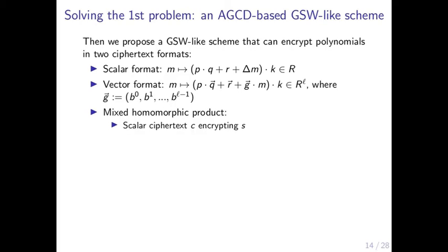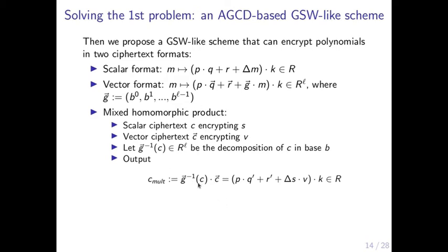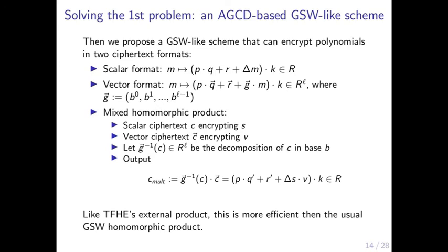We define a mixed homomorphic product: take a scalar ciphertext and a vector ciphertext, decompose the scalar ciphertext in base b to get l polynomials with small coefficients, then compute the inner product with the vector ciphertext. Just like the external product in TFHE, using this mixed homomorphic product is more efficient than simply using the standard GSW homomorphic multiplication.